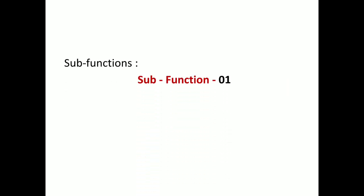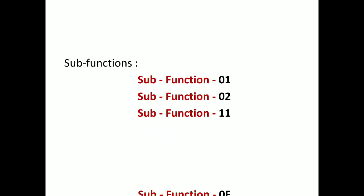Now we get into the sub-functions. Read DTC Information has 18 sub-functions in total. In this tutorial I am covering four sub-functions by priority. In the next tutorial I will cover eight to ten sub-functions, and in a third or fourth tutorial I will complete the entire Read DTC Information service across three consecutive tutorials.